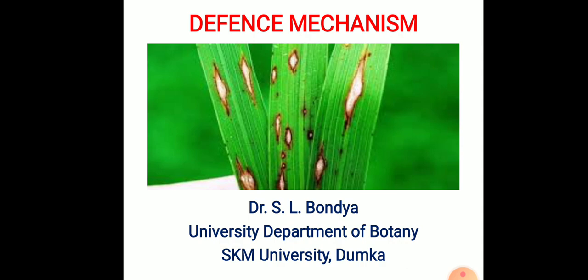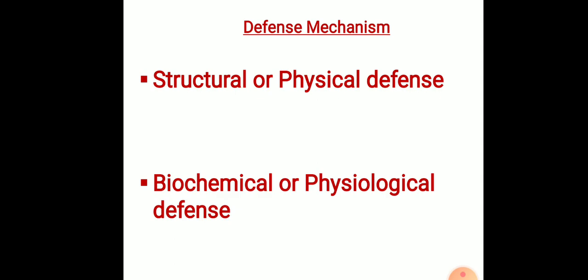Certain other structural characteristics, however, are absent in the healthy plant, but they are formed as soon as the plant is attacked by the pathogens. So there are two types of defense mechanism found in plants: structural or physical defense mechanism, and biochemical or physiological defense mechanism.